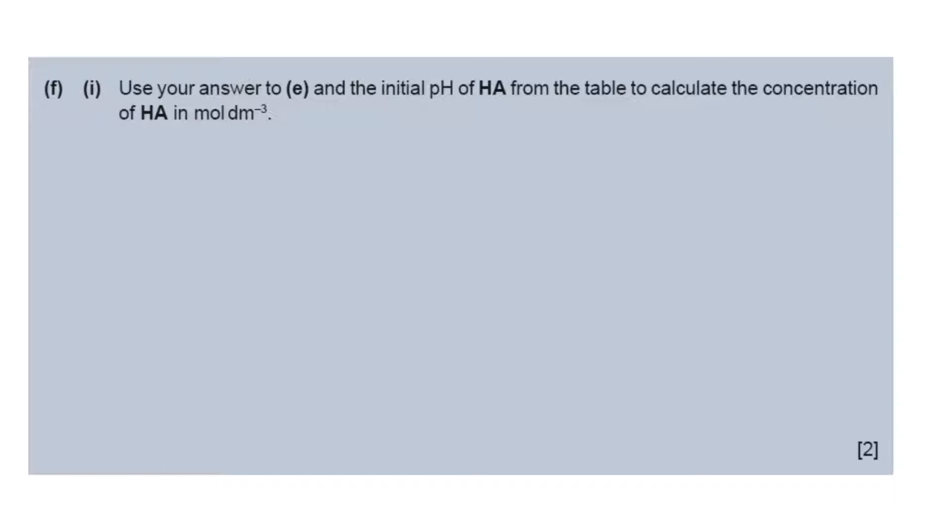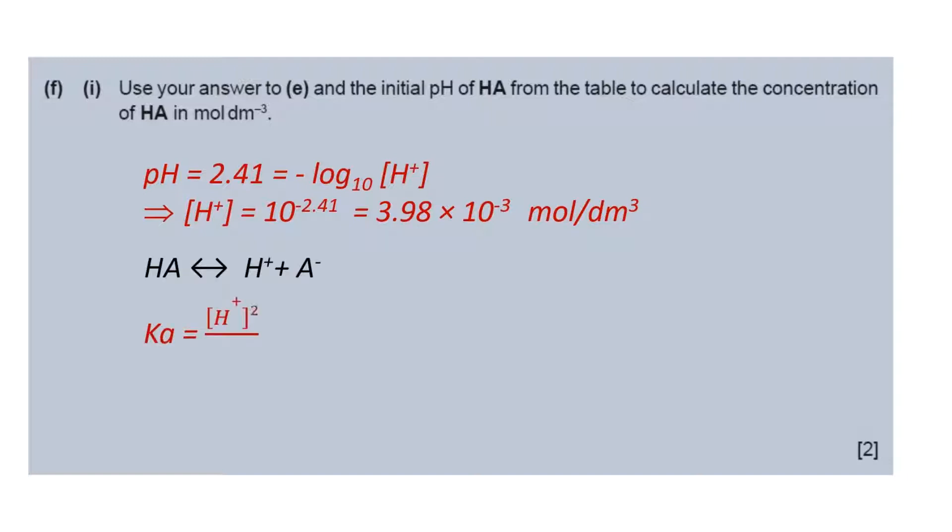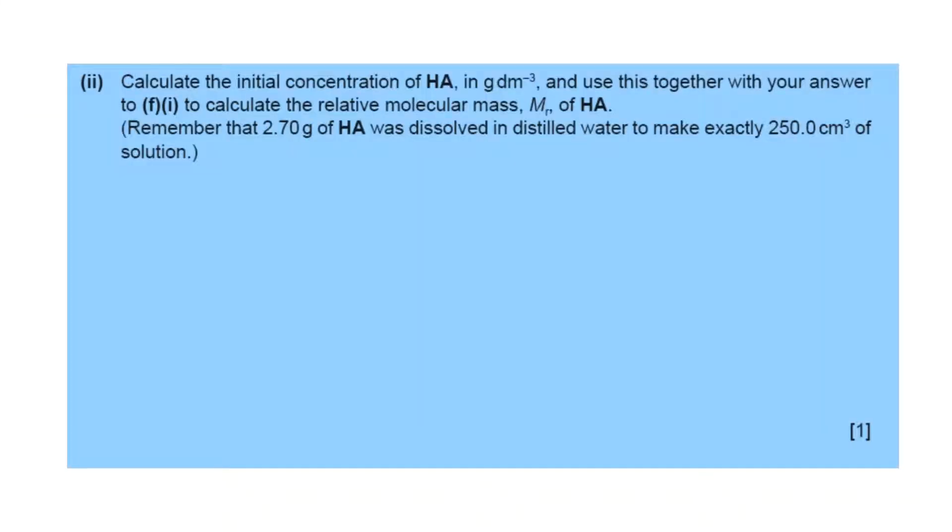Another question: using your answer to E and the initial value of pH from here, calculate the concentration of HA in mol/dm³. So initial pH is 2.41, pH equals minus log[H⁺]. From here, H⁺ is 3.89 × 10⁻³. Again, we write the acid dissociation constant equation. From here, if we put the value of HA and H⁺, we get the concentration of HA as 0.12 mol/dm³.